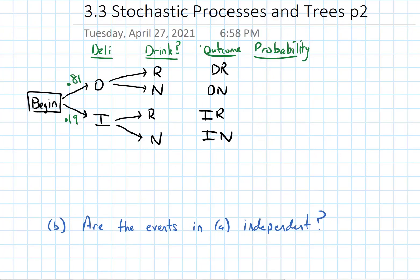So at Domenico's, a root beer happens 60% of the time, so I put 0.6. And at Ike's, it's 80% of the time, so we put 0.8. At Domenico's, if she gets a root beer 60% of the time, that means not getting a root beer happens 40% of the time, or 0.4. Similarly, at Ike's, the probability of not getting a root beer is 0.2, because it has to add up with 0.8 to give 1. So 20% of the time she won't get a root beer at Ike's.